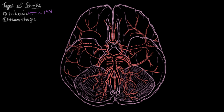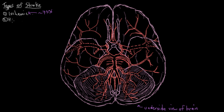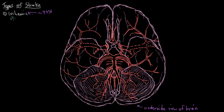This is an underside view of the brain, so you can get a really good look at the blood vessels that originate underneath the brain and supply it with blood. There are three major causes of ischemic strokes, and we'll go through each one in turn. The first one is an embolism, or an embolic cause of stroke.